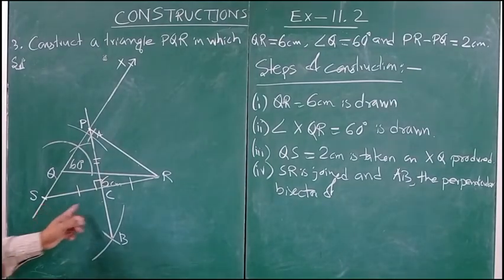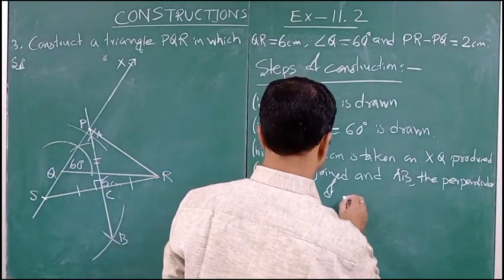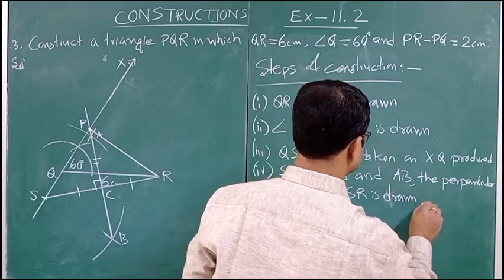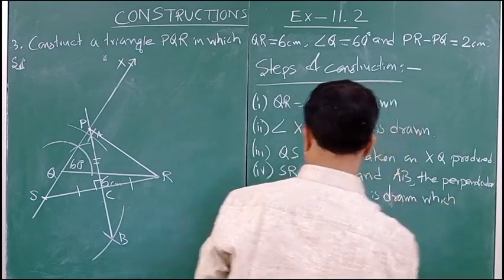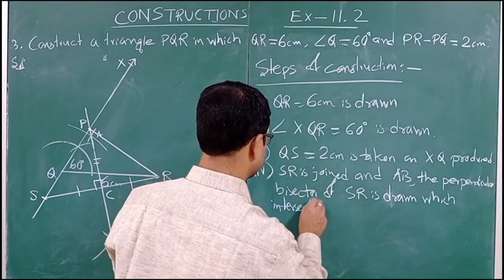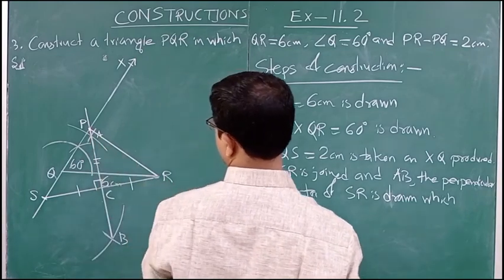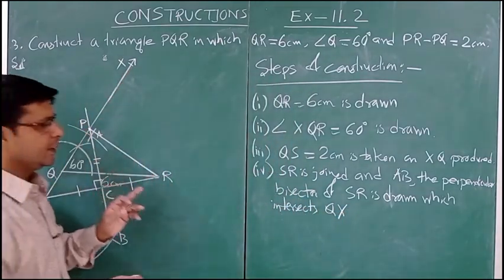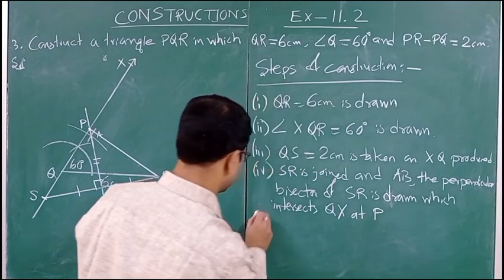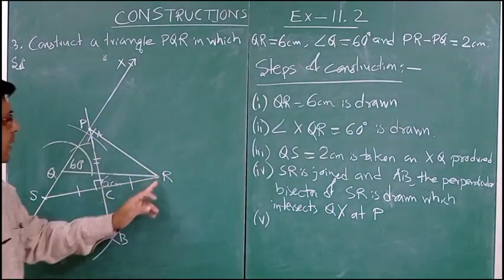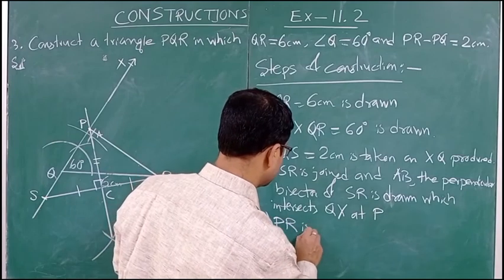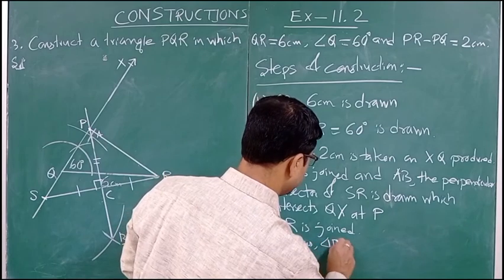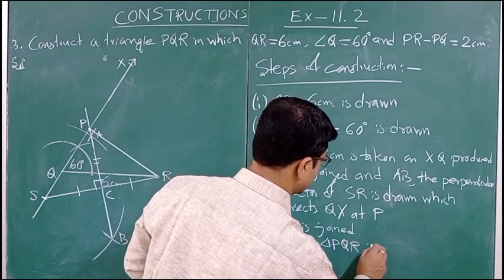AB, the perpendicular bisector of SR, is drawn which intersects QX at point P. Step 5 — PR is joined. Thus triangle PQR is obtained.